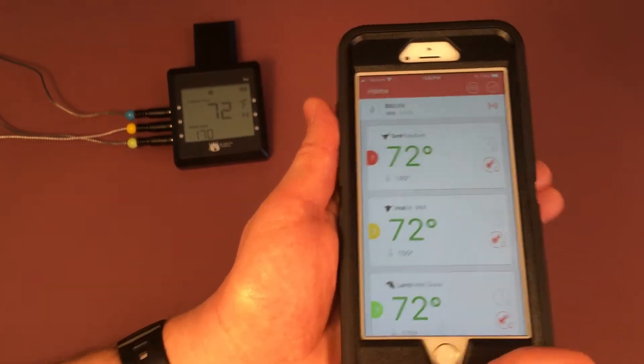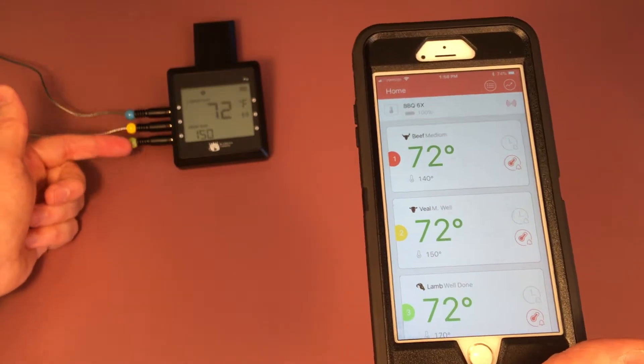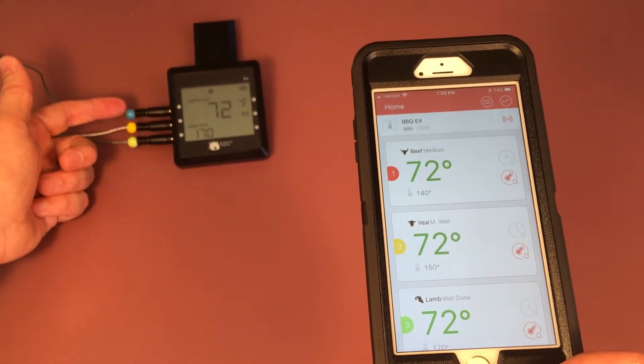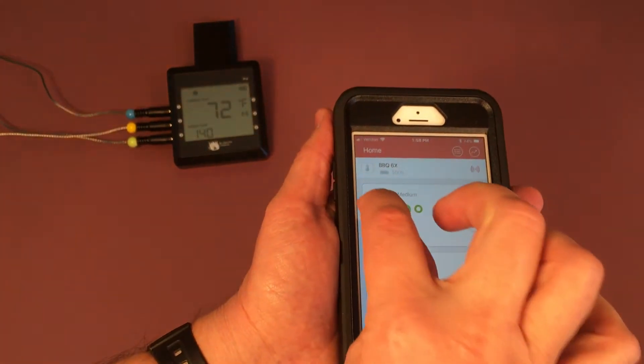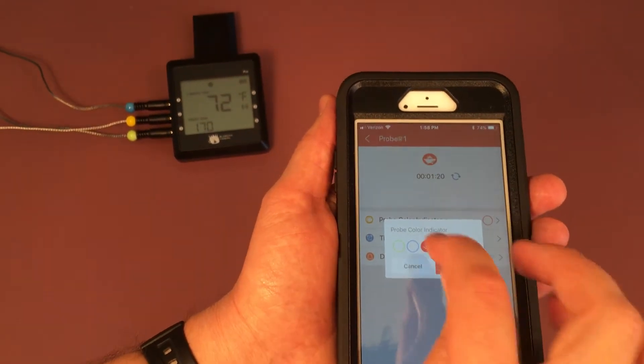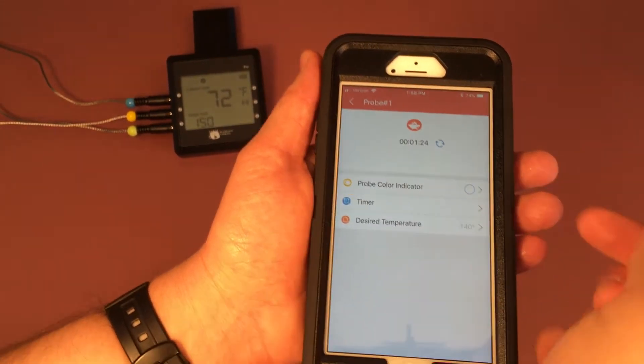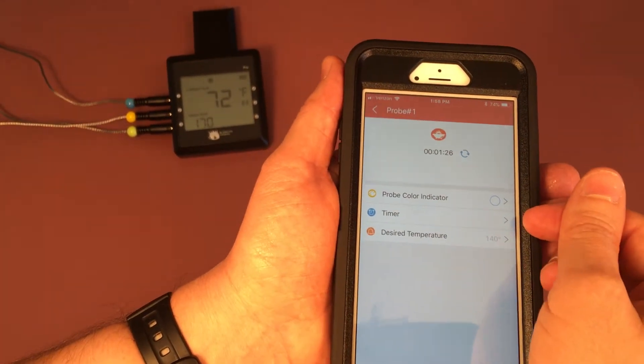We can also change the probe color. Let's match them so that we have the probe same as the probe color beads on our probes here. Let's match the first one to be blue, so just hit that, go to your probe indicator and change that to blue, hit OK. Now it will be blue. You also see you have the timer menu that will go back over the timer, or the desired temperature menu also goes back to your preset menu again.